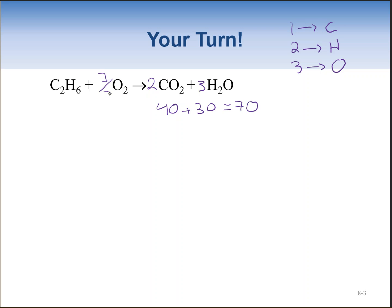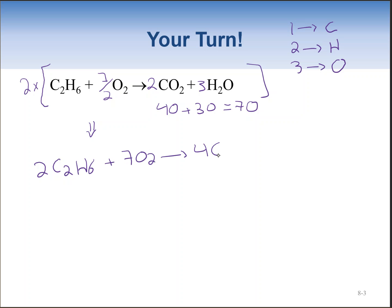To have seven oxygens, we give O₂ a coefficient of seven-halves, which yields seven oxygens. But this coefficient is a fraction and fractions are not acceptable as balancing coefficients, so we multiply the entire equation by two. We end up with 2C₂H₆ + 7O₂ → 4CO₂ + 6H₂O. This reaction is now balanced.